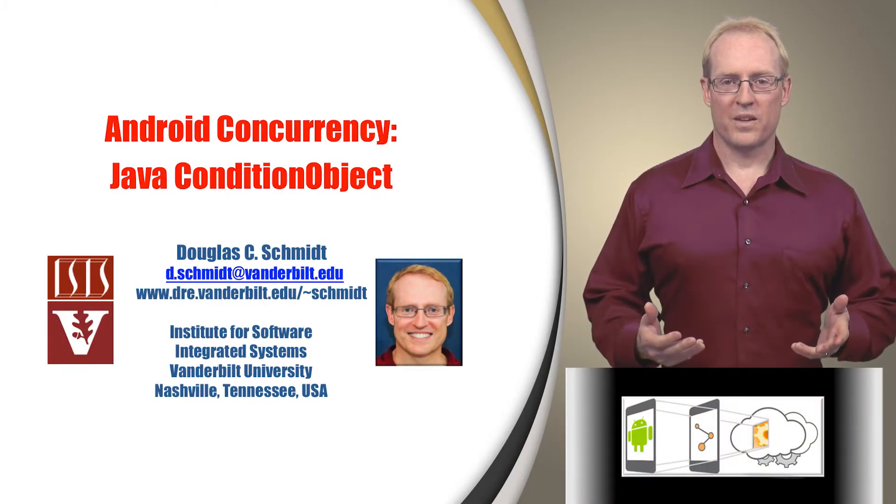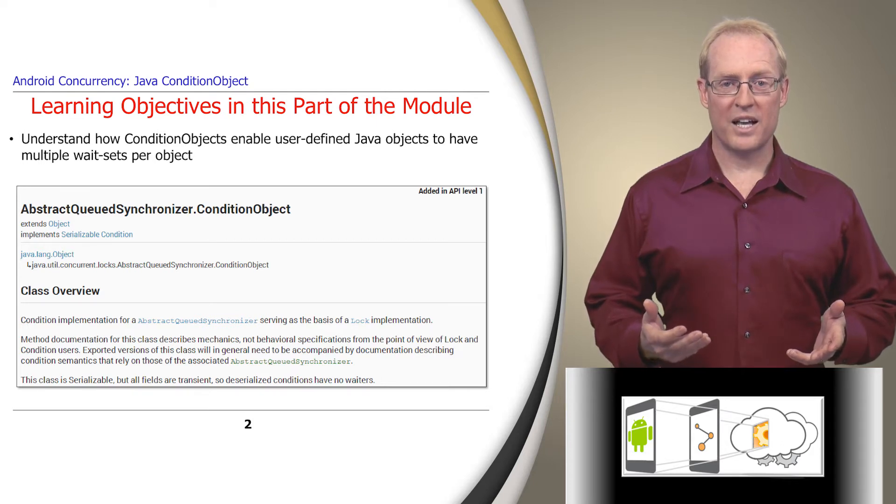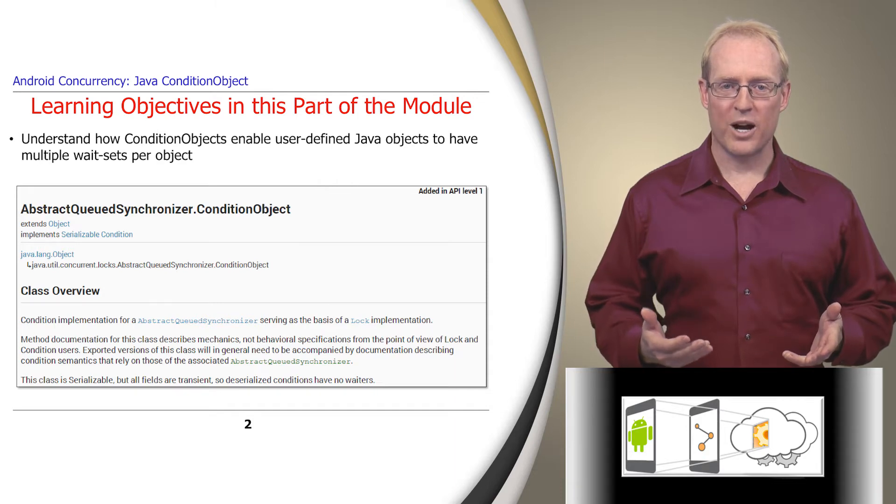Welcome to the next part of the module, which covers the Java condition object class. This part provides a conceptual overview of condition variables, explains how the Java condition object class implements these concepts to enable user-defined Java objects to have multiple weight sets per object.